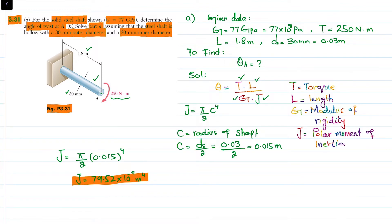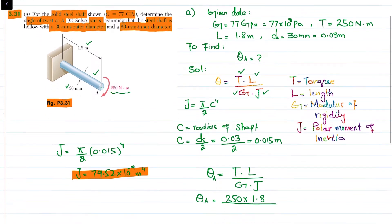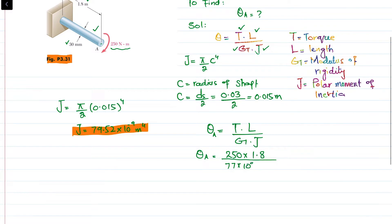Now plugging all values into the formula: theta_A = (250 N·m × 1.8 m) / (77 × 10⁹ × 79.52 × 10⁻⁹). When you calculate this, the angle of twist at point A comes out to be 73.49 × 10⁻³ radians.